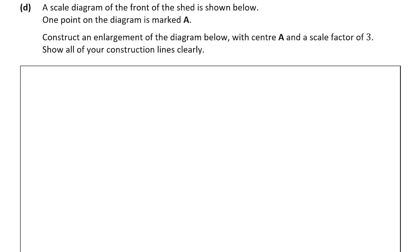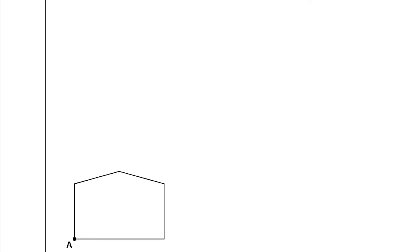Now let's look at part D — this is a question about enlargements. We're told it has center A and a scale factor of 3, so we need to enlarge the diagram using a scale factor of 3 with center A. I recommend following along on screen. First, I'll label each point: A is already marked, and I'll label the others B, C, D, and E. With a scale factor of 3, I must increase the distance from A to each point by a factor of 3.